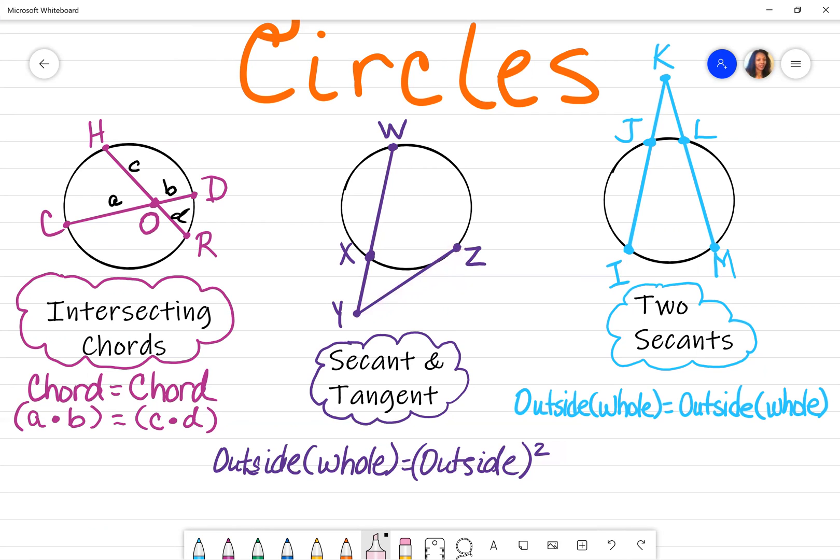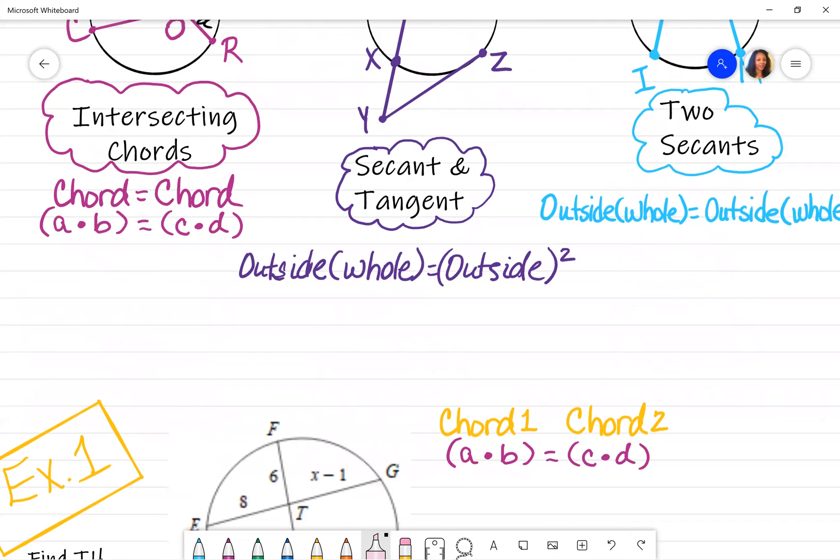And then the next illustration is two secants. So again, I have a secant going through a circle here, and I also have a secant going through the circle there. They're both still represented by this formula that I just went over. Outside times whole is still equal to another outside times whole. So that's what it means when you have two secants. You have to understand the difference between a chord, a secant, and a tangent in order to know which formula to use.